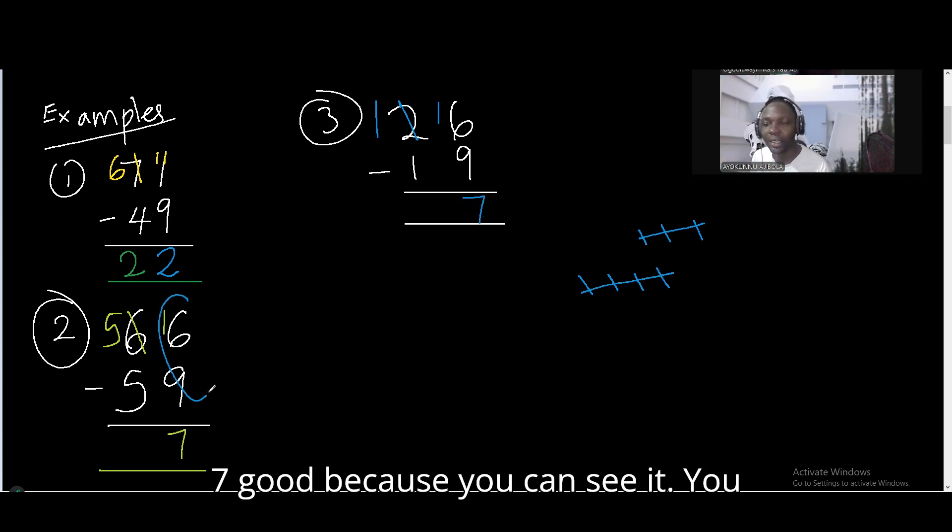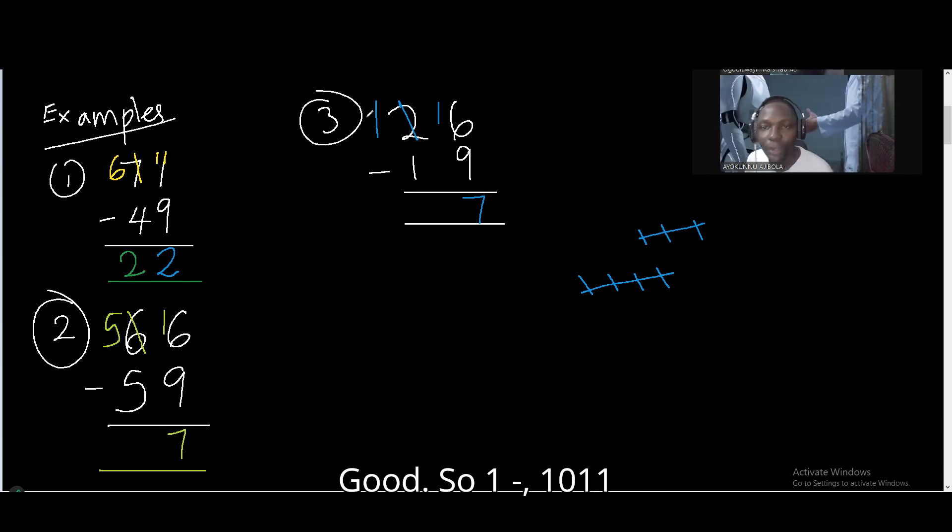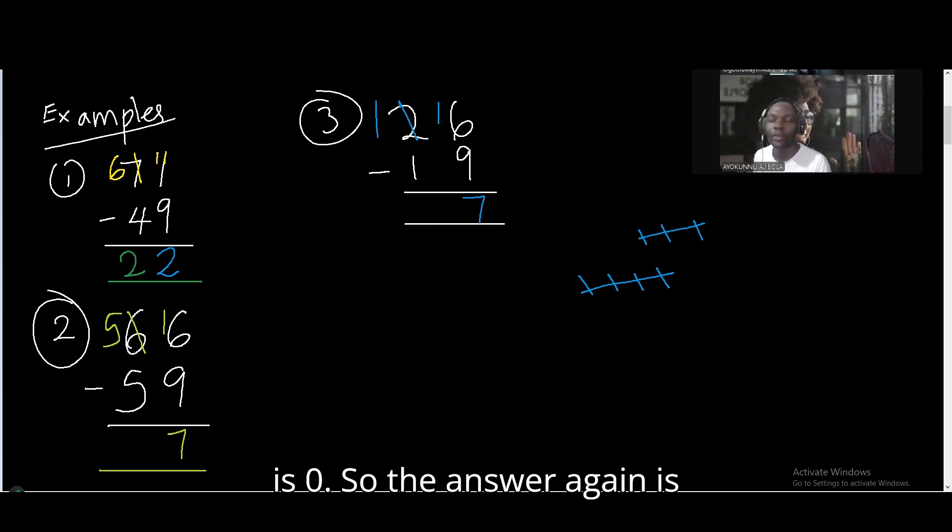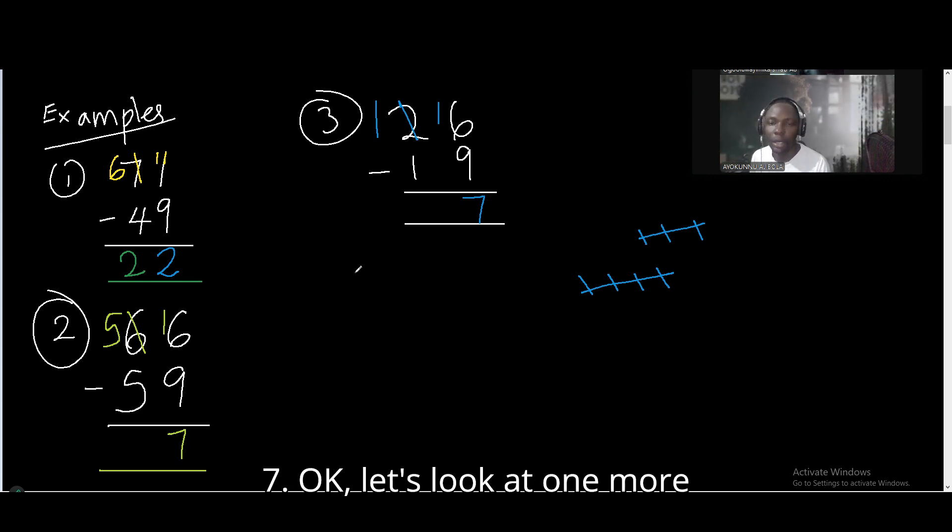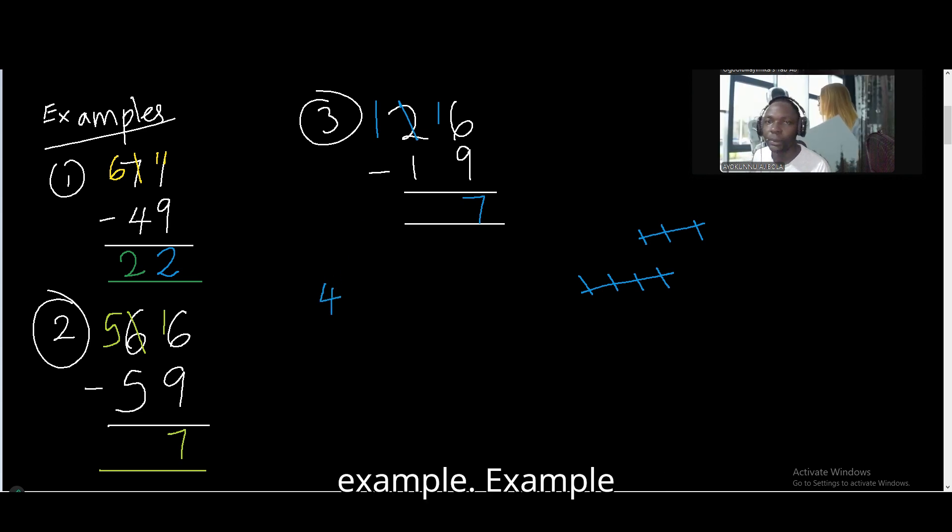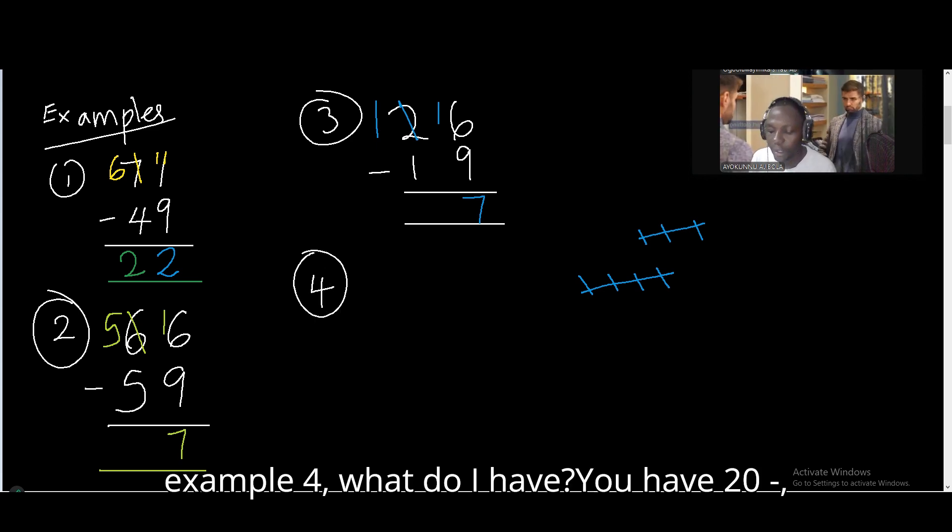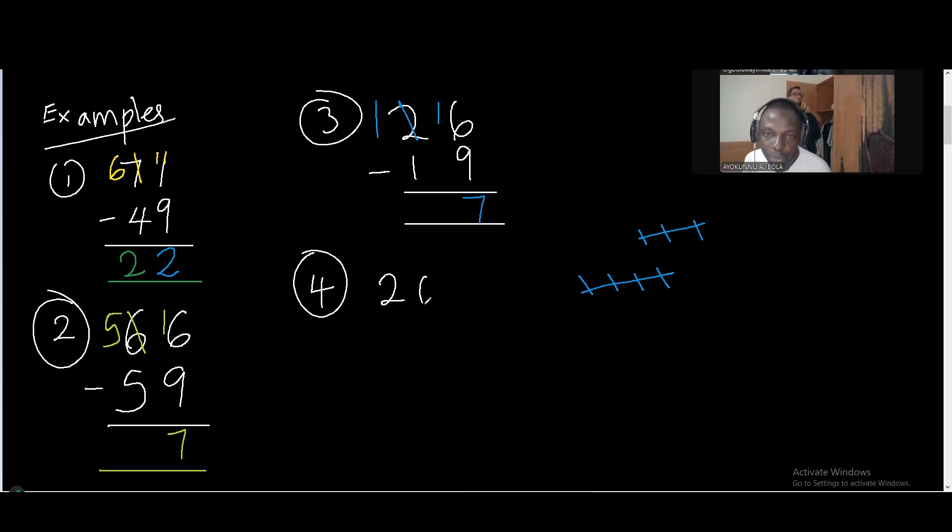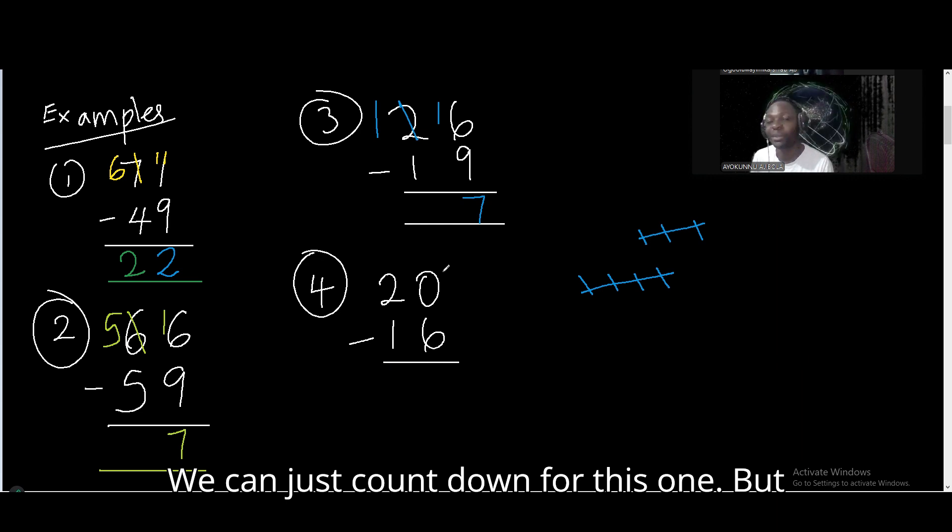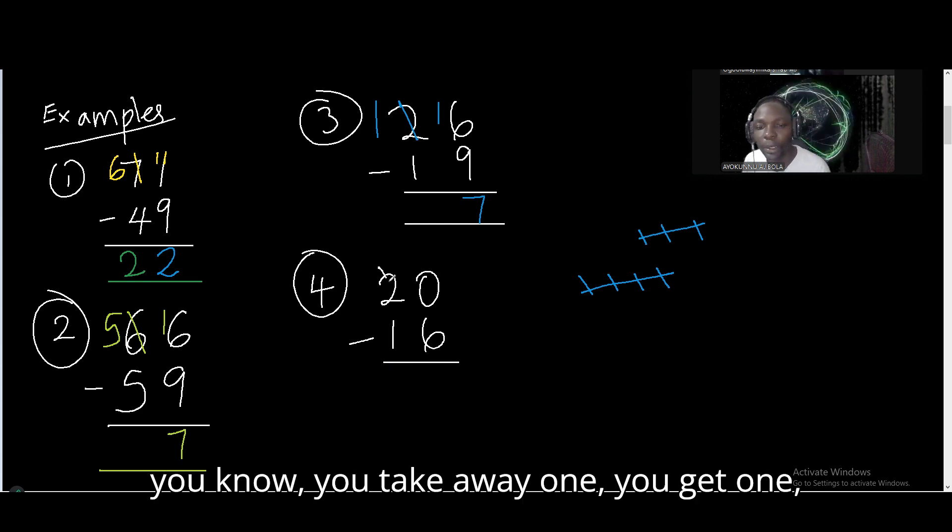Because you can see it here, right? Good. So 1 minus 1 is 0. So the answer again is 7. Let's look at one more example. Example 4. For example 4, what do I have? You have 20 minus 16.